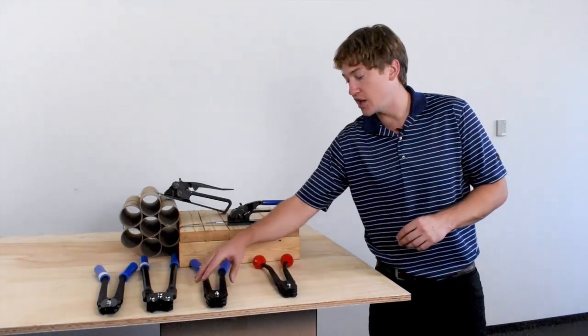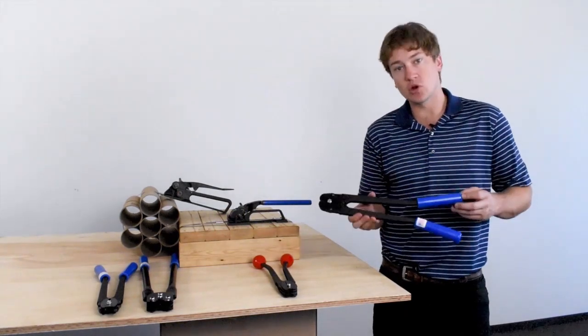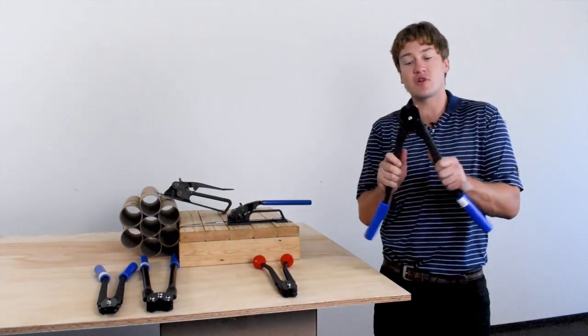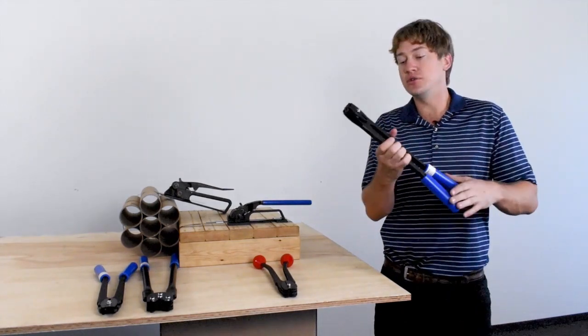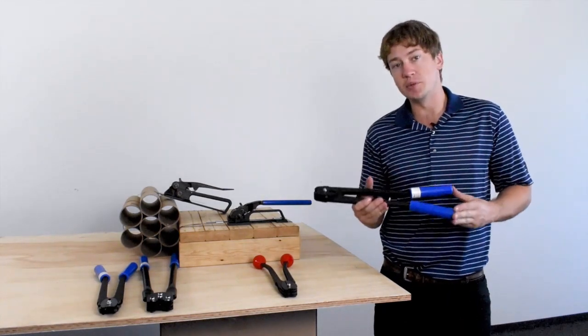So then we have the EP1800 which is for similar applications. Again this is a front action double notch sealer and this is going to be used on flat loads with an open seal.